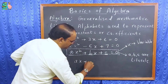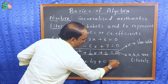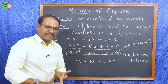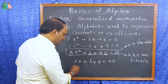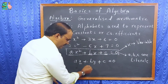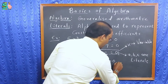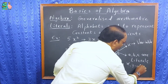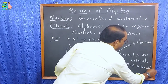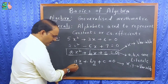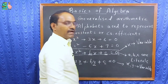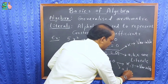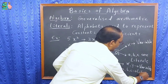Another example: a x plus b y plus c equal to zero. This is a linear equation in two variables. Here x and y are the variables, and a, b, c — the lowercase letters used as coefficients — are the literals.